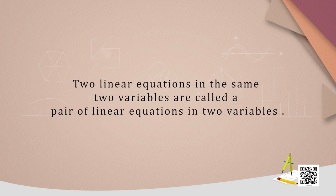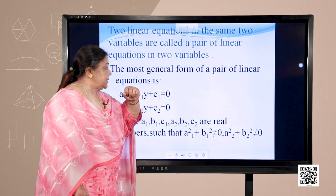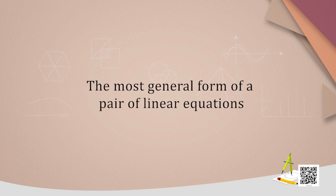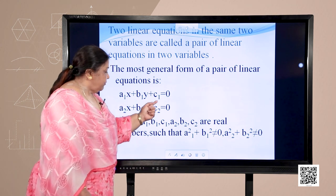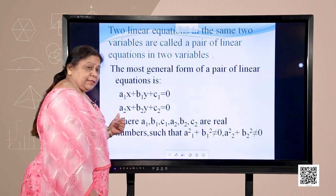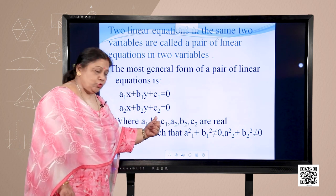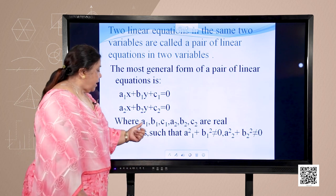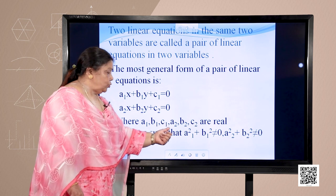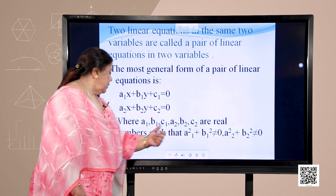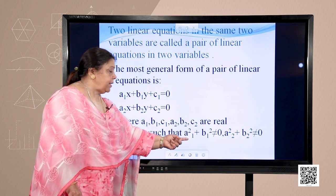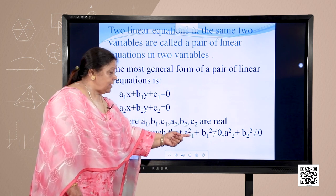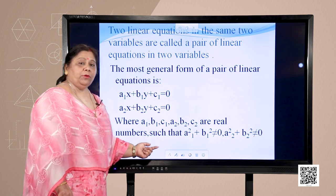Two linear equations in the same two variables are called a pair of linear equations in two variables. The most general form of a pair of linear equations is: a1x + b1y + c1 = 0, and a2x + b2y + c2 = 0, where a1, b1, c1, a2, b2, c2 are real numbers such that a1² + b1² ≠ 0 and a2² + b2² ≠ 0.